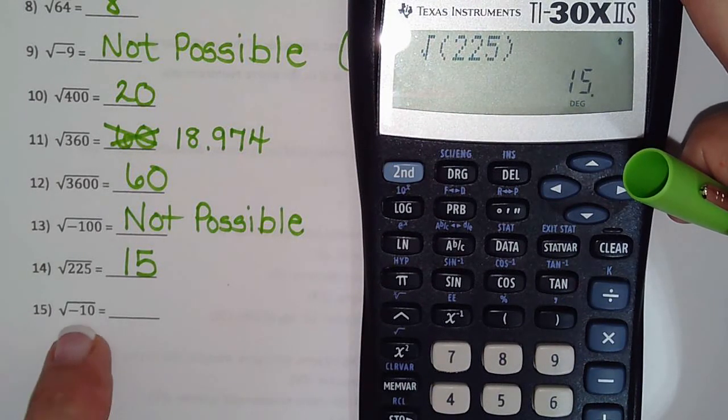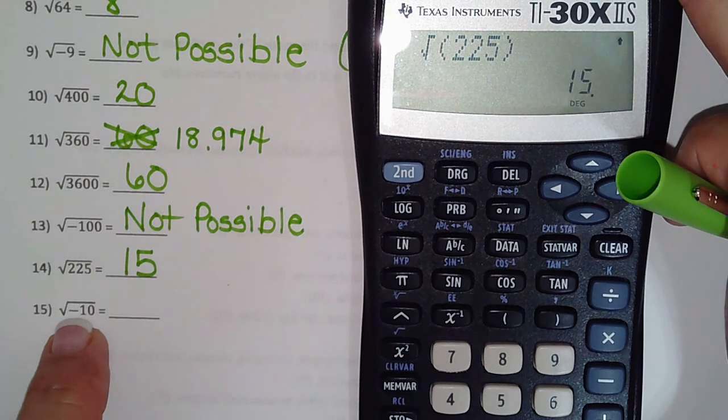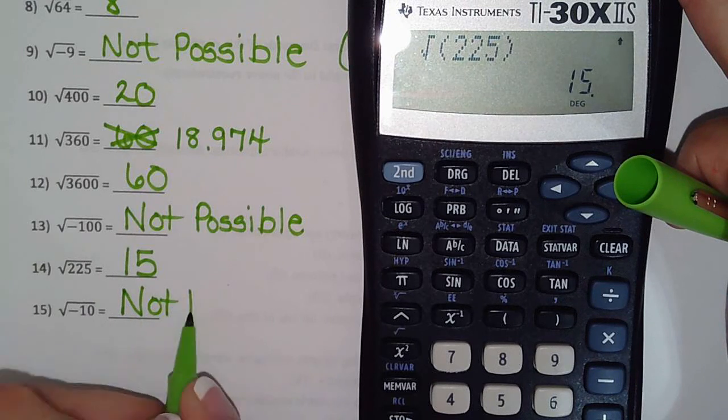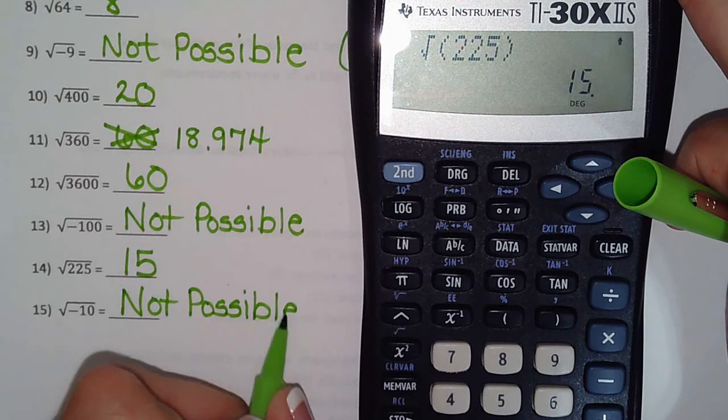And then here's another not possible one, because no number times itself will ever give us a negative, so negatives are not possible underneath the square root when we're only working with real numbers.